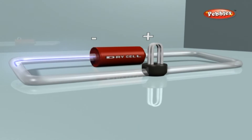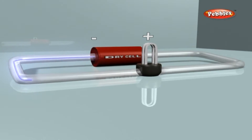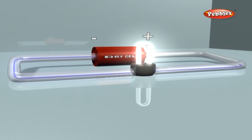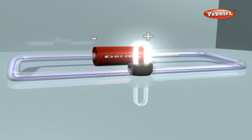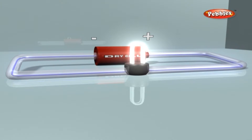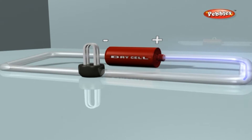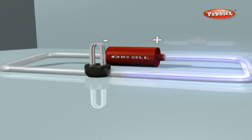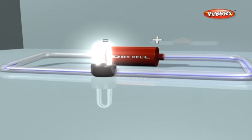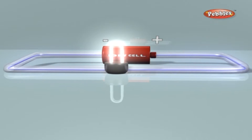The cell is a source of electric current. The direction of flow of electrons is from the negative to the positive terminal of the cell, as shown by the arrow in the figure. The direction of conventional current is from the positive to the negative terminal of the cell, as shown in the figure.